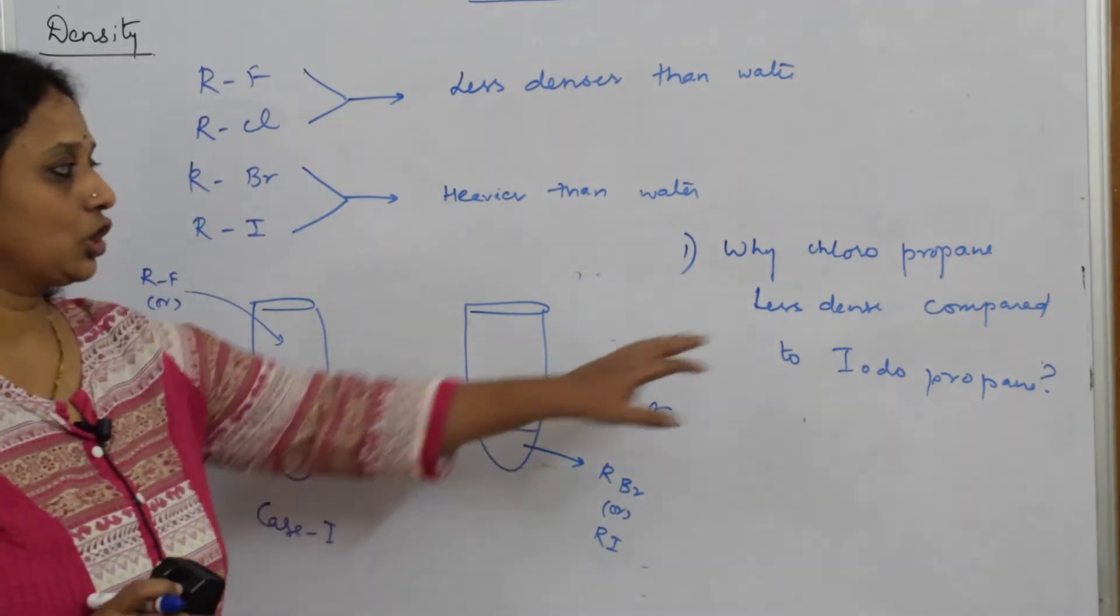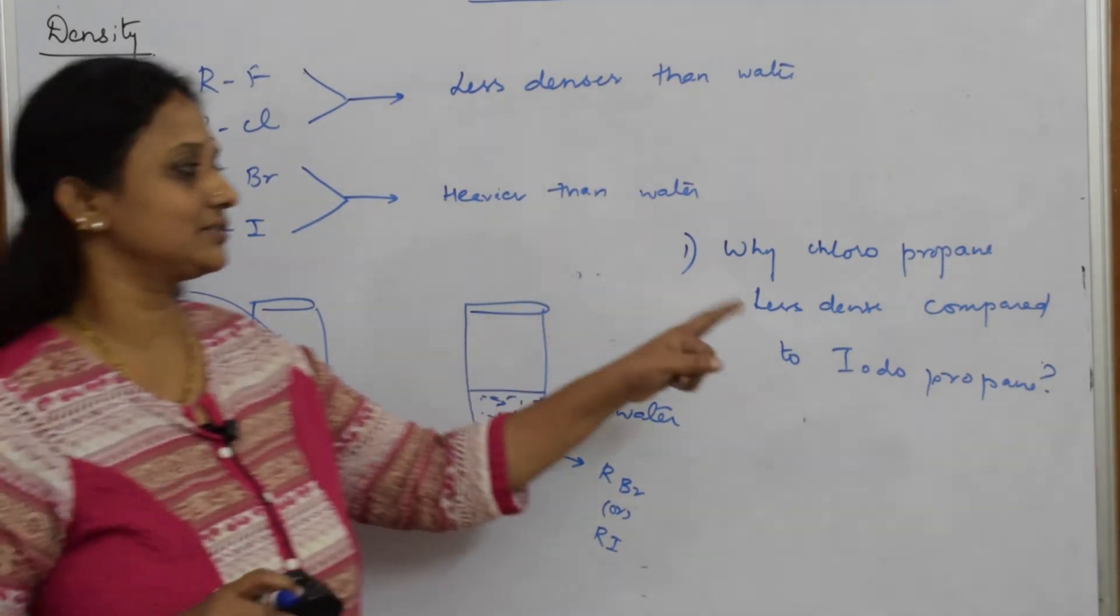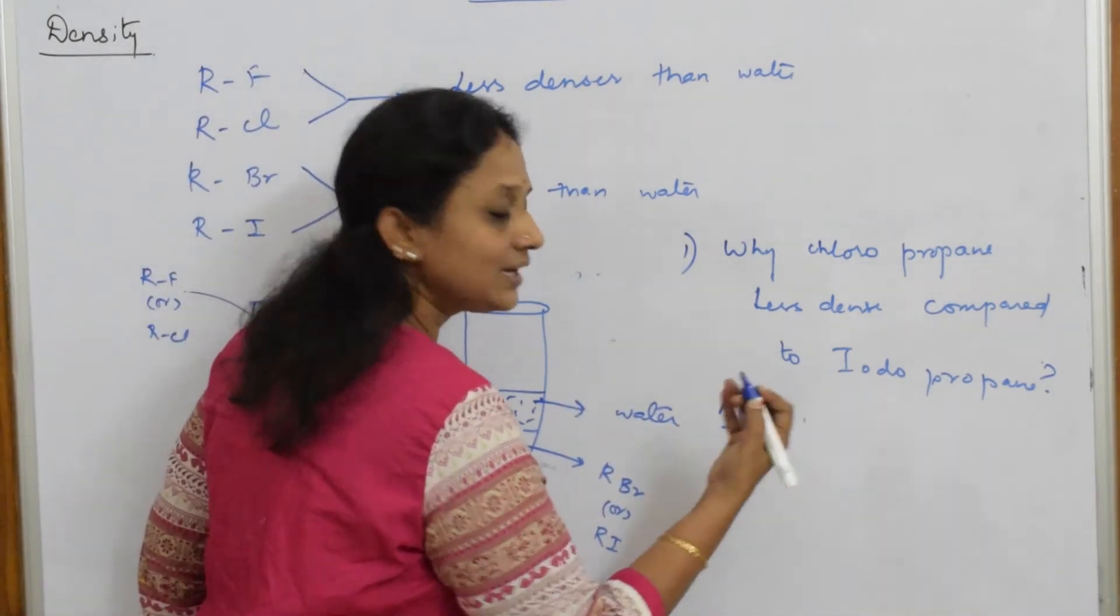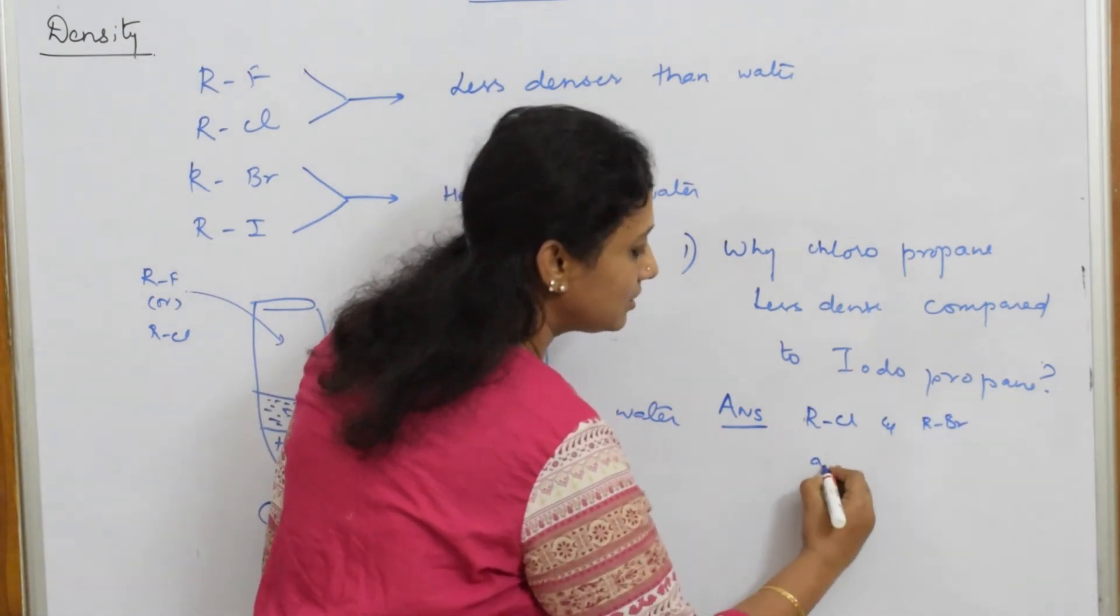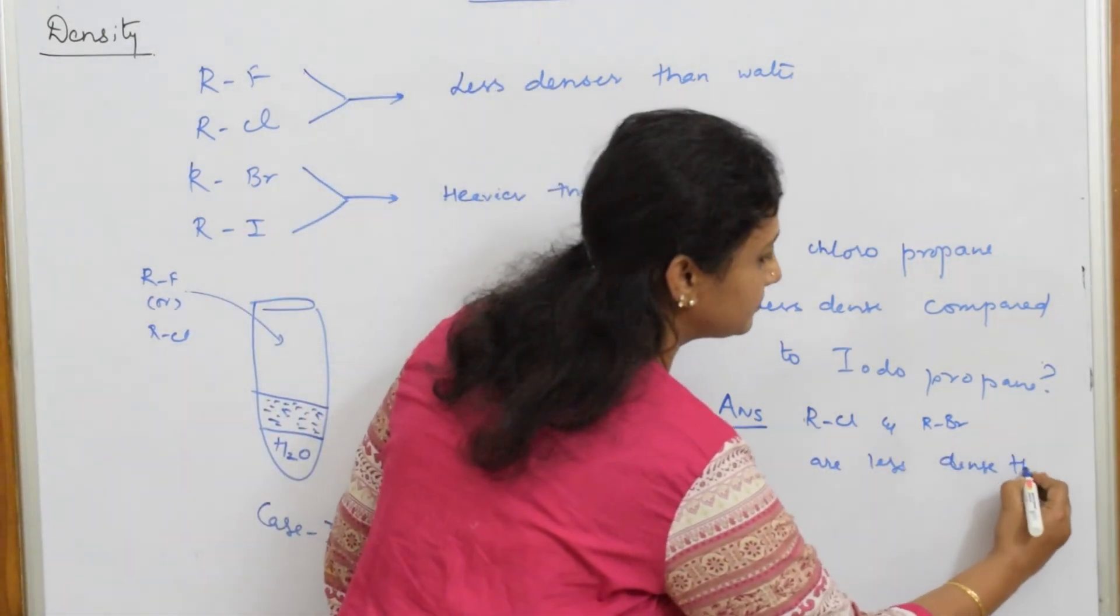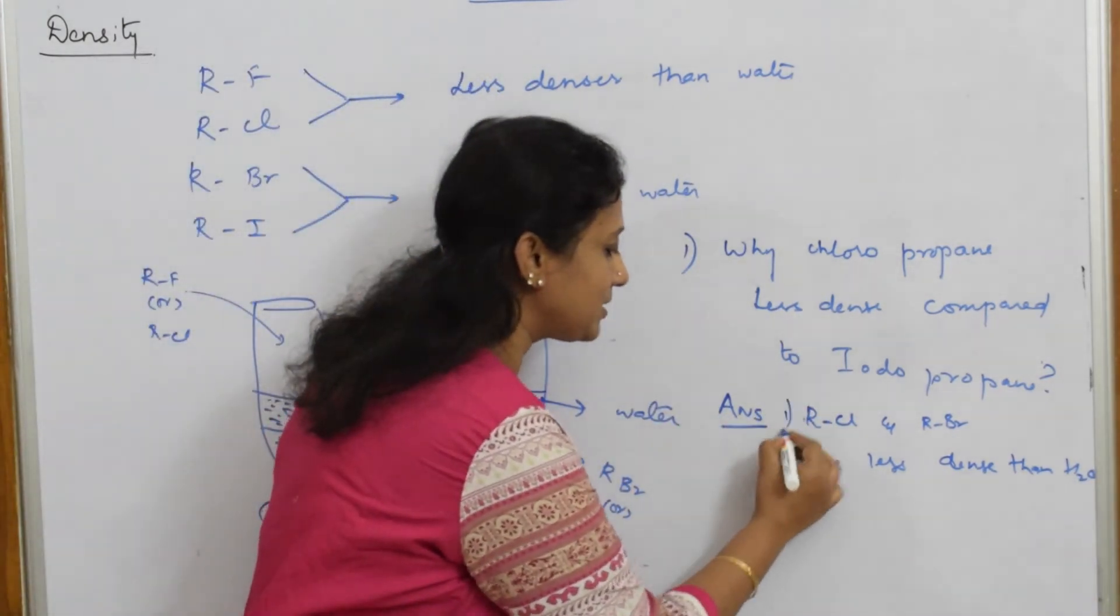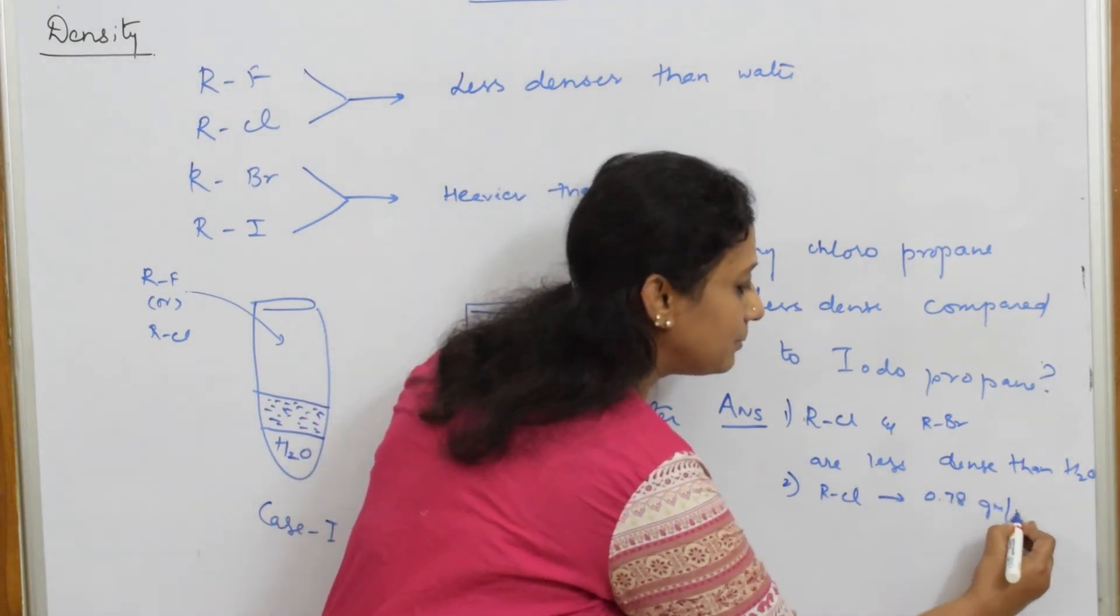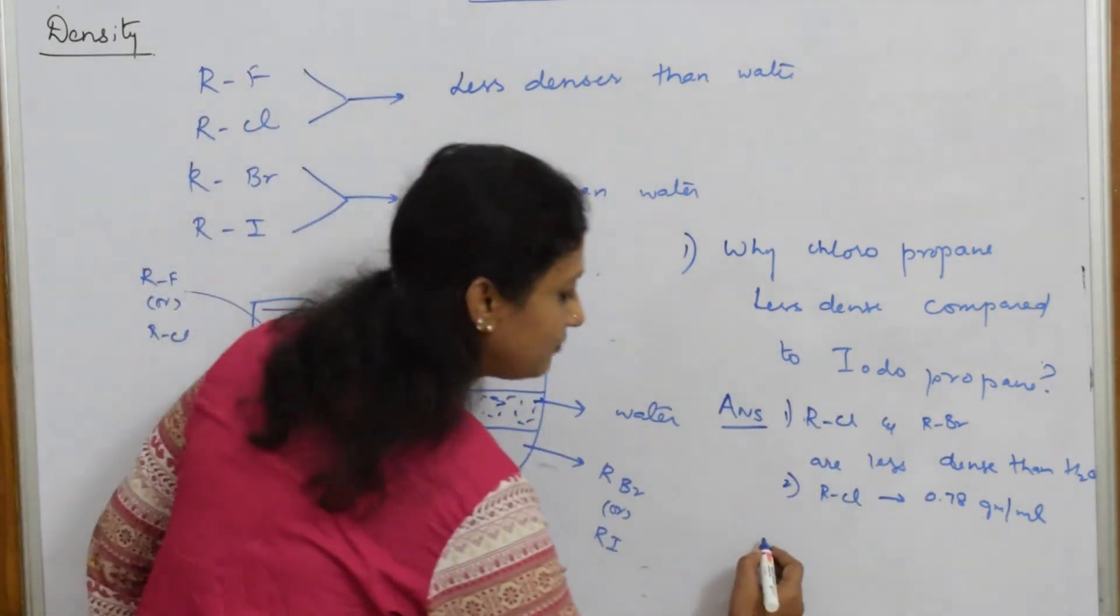Because we know R-Cl and R-F are less dense than water. That's the reason they float. The density of R-Cl observed was 0.78 grams per ml. When we come to iodopropane, we know that R-I and R-Br are heavier in nature.